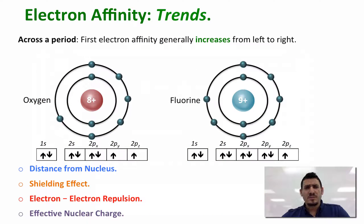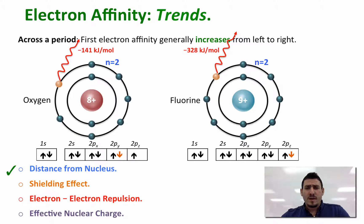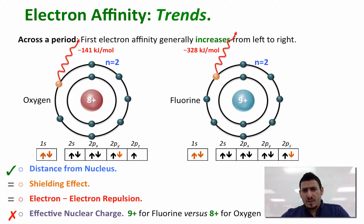Let's discuss why the first electron affinity generally increases from left to right. Consider oxygen and fluorine, where oxygen is to the left of fluorine. When we add an electron to each, the energy released in the case of fluorine is much higher than that of oxygen. Even though the electron is added to the same energy level — same distance from the nucleus — and the shielding effect is the same since both have two inner electrons, the electron-electron repulsion is also the same. The nuclear charge plays the major role: fluorine has 9+ versus only 8+ for oxygen.